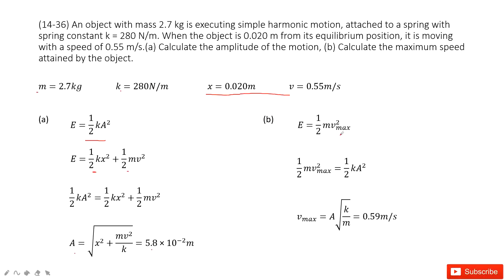And then the maximum speed is at the balanced position where the elastic potential energy is zero. So kinetic energy should be one-half m v max squared.